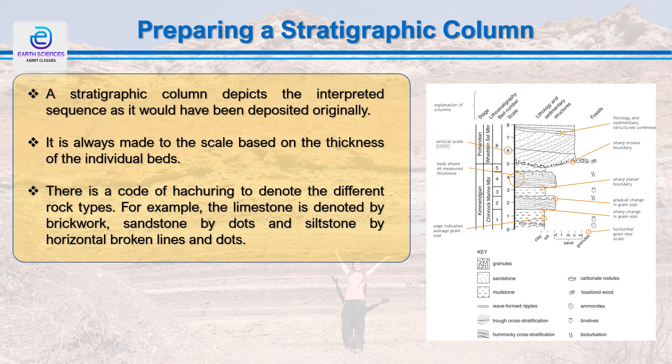The purpose of data collection along a traverse is to prepare the stratigraphic column. All data collected — structural data such as attitude of beds, paleontological data, and lithological data — are needed to prepare the stratigraphic column. It is always made to scale based on the thickness of individual beds, which is why we measure the thickness of each bed. If the beds are dipping, we use the true thickness and represent it horizontally while preparing the stratigraphic column.